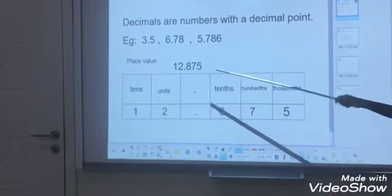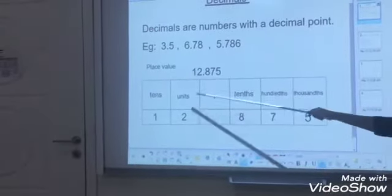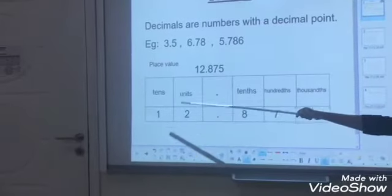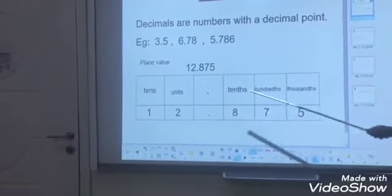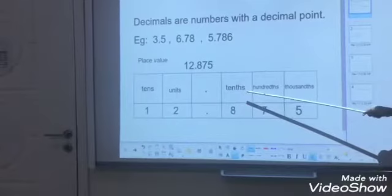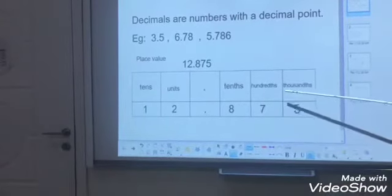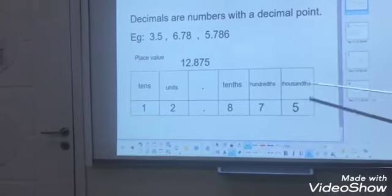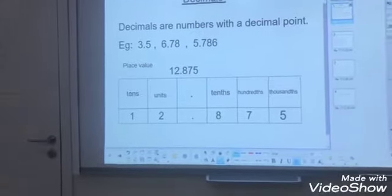So I think it is clear for you. In the number you can see here, 2 is in the units place, 1 is in the tens place. And after the point, 8 is in the tenths place, 7 in the hundredths place, and 5 in the thousandths place.